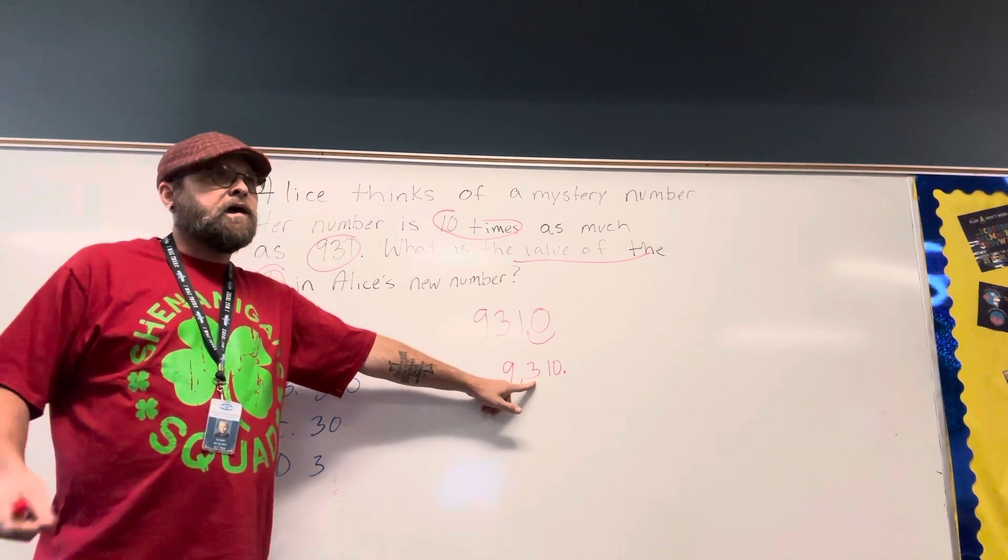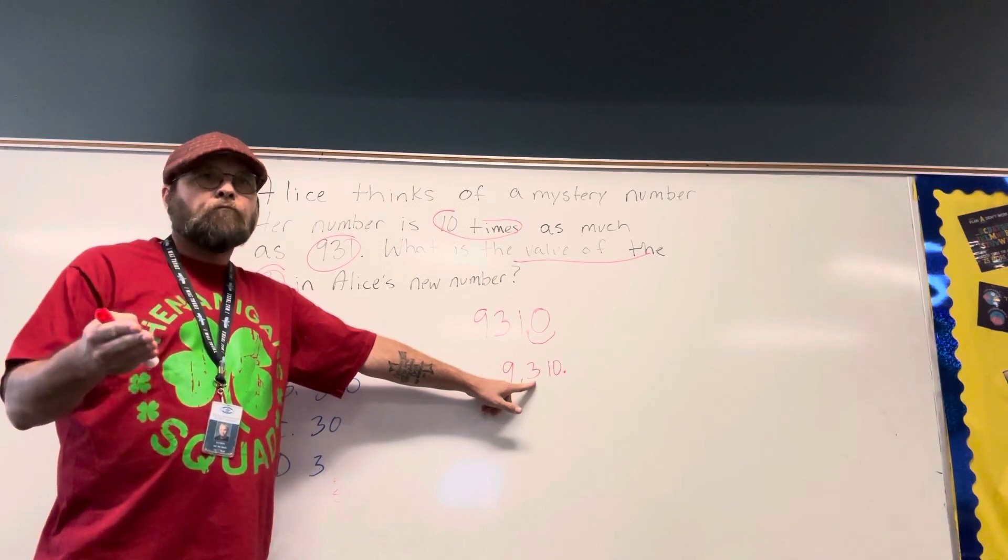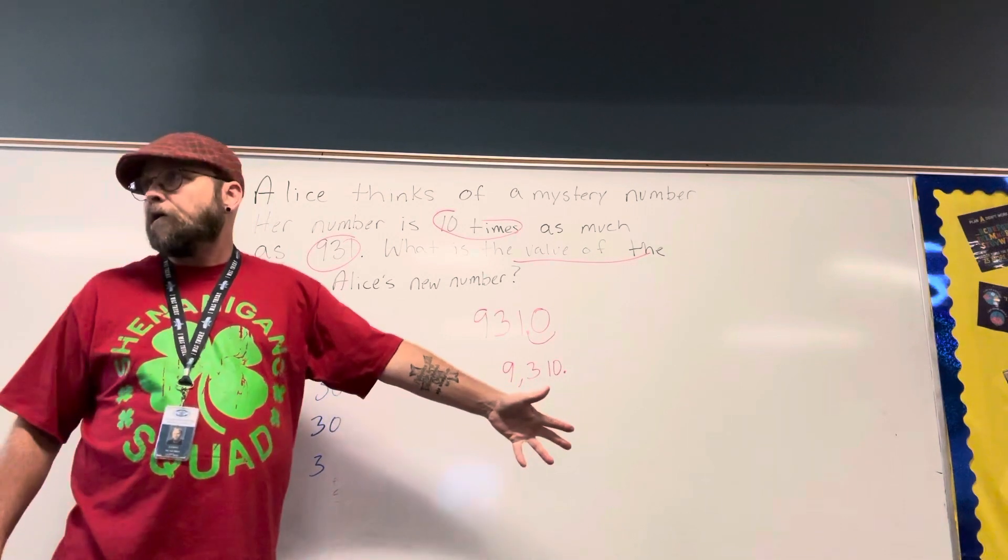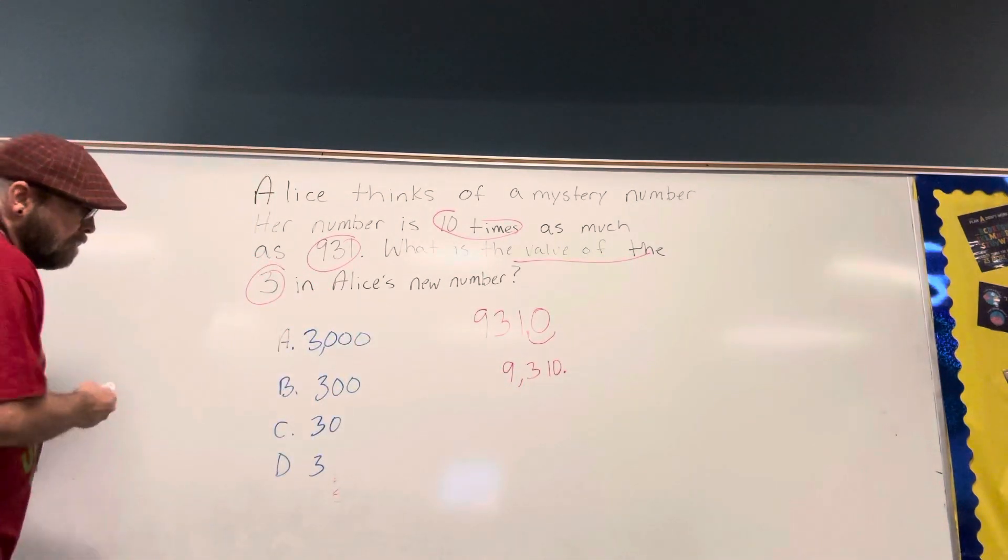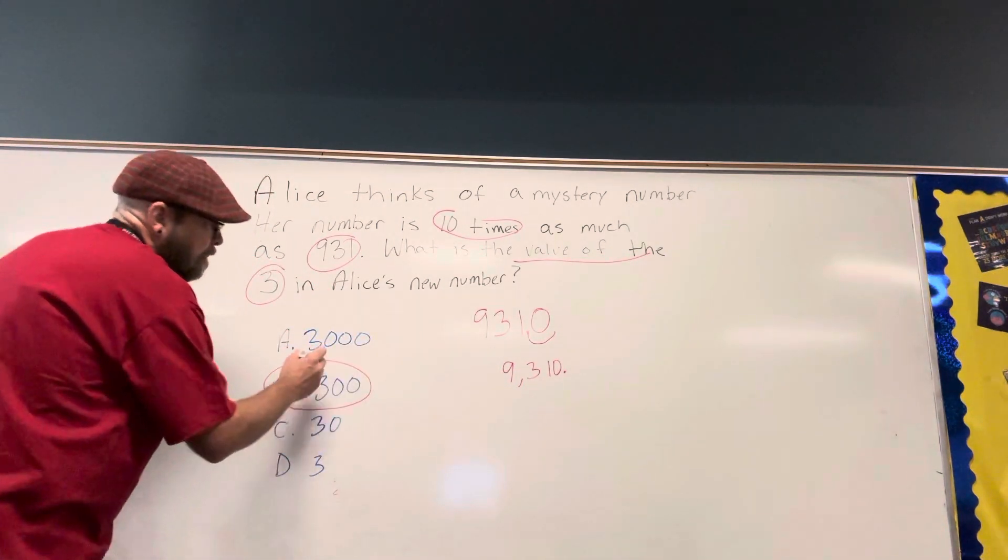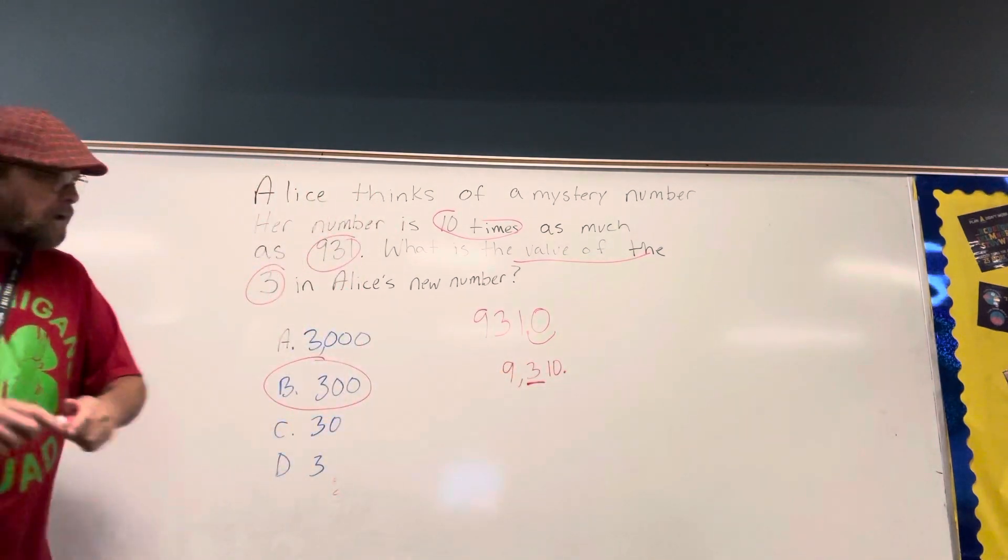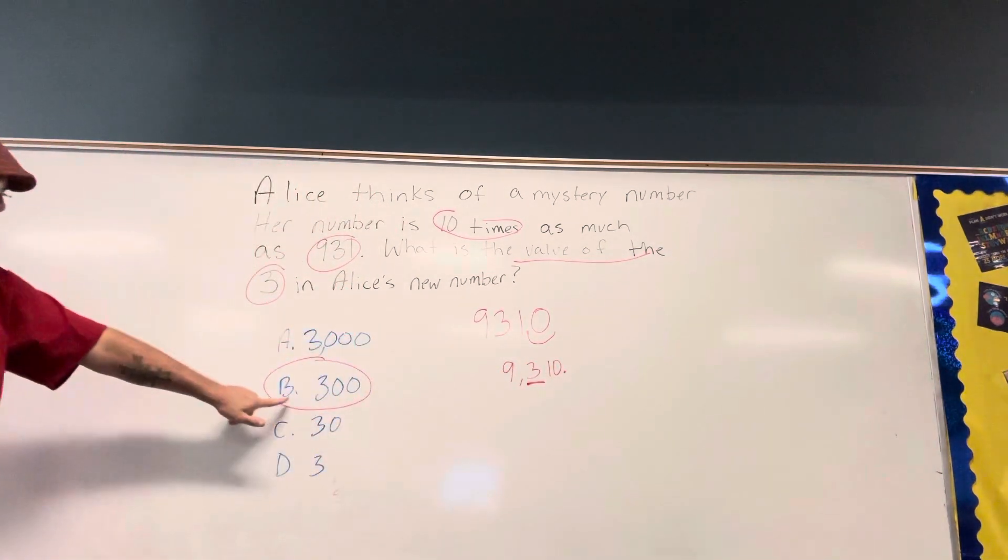So if you have a person, one person gives you $300 bills, how much do you have? $300. That is why answer B, because the three is in the hundred's place, and three hundred's equals 300.